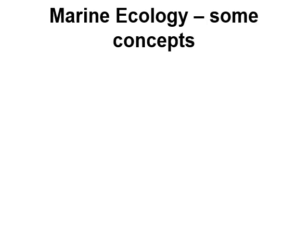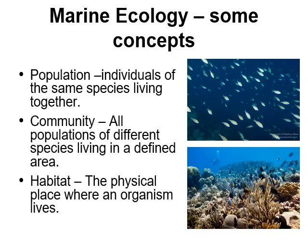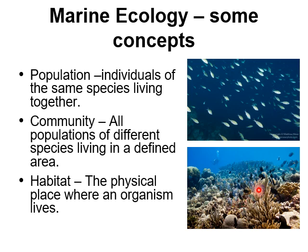Let's talk about some key concepts in marine biology — it's important to distinguish between a population, a community, and a habitat. Populations are individuals of the same species living in the same area. For example, these brown chromis fish all living on the same reef are a population — individuals of the same species in the same place. A community involves more than one population. A coral reef community includes different types of corals, fishes, sponges, anemones, and invertebrates — all these different living things make up a community, meaning all different populations of different species in one particular area.